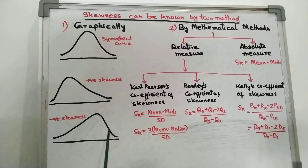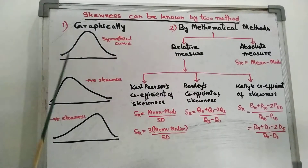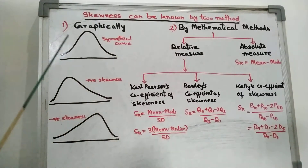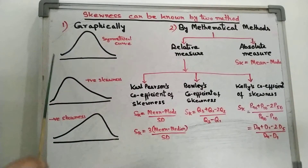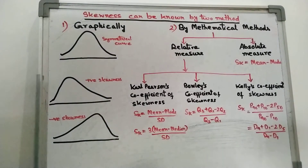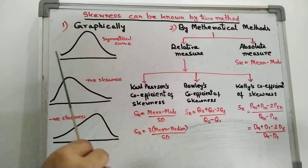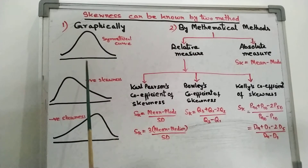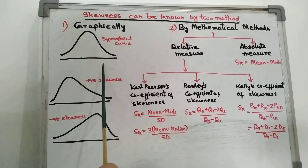Now, look at this figure — it is negatively skewed. One way of finding skewness is by just plotting the graph or distribution curve — the frequency distribution curve. If the curve shape is like this, that means bell shape or symmetrical shape, then it is called a symmetrical curve, meaning skewness is not there — absence of skewness.